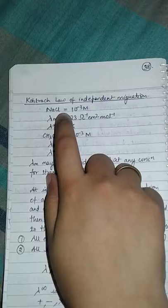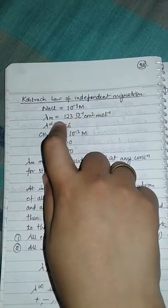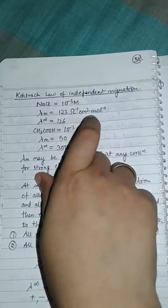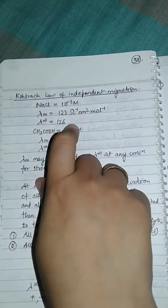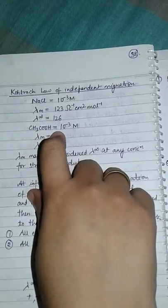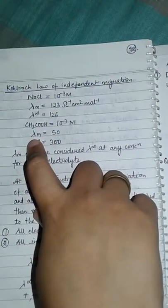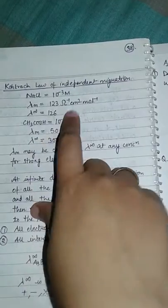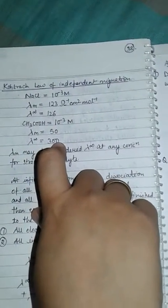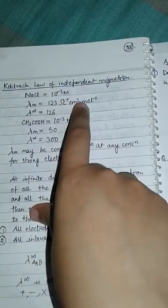The Kohlrausch law of independent migration. For example, NaCl concentration 10^-3 M, lambda M is 123 ohm inverse centimeter square mole inverse, lambda infinity is 126 ohm inverse centimeter square mole inverse. CH3COOH concentration is 10^-3 M, lambda M is 50 ohm inverse centimeter square mole inverse, and lambda infinity is 300 ohm inverse centimeter square mole inverse.